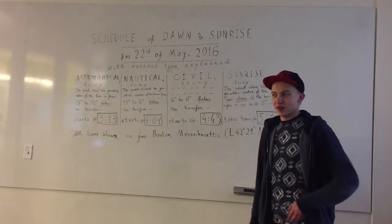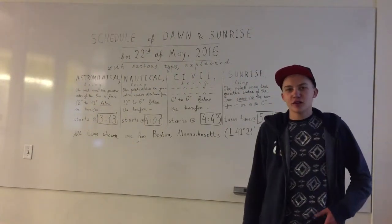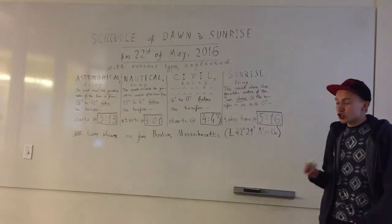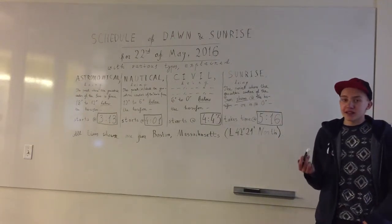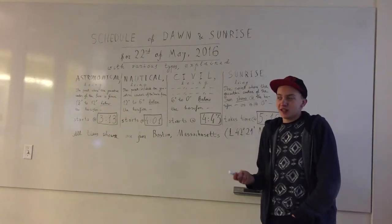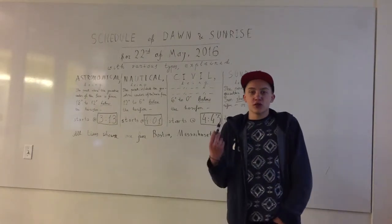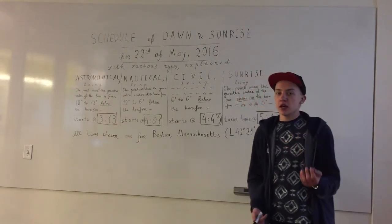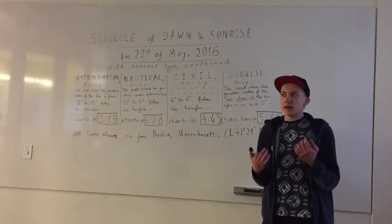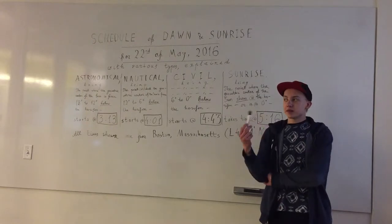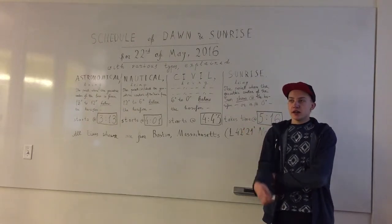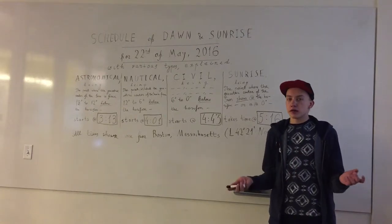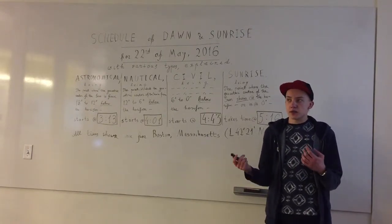Good morning everyone. I hope I'm finding you well. Today I'm going to explain how to differentiate the different types of twilights. As you probably know, when the sun rises, the point where the first rays of the sun appear before the horizon and until the time when the rays of the sun are totally light on the surface of the Earth is called the twilight or the dawn.